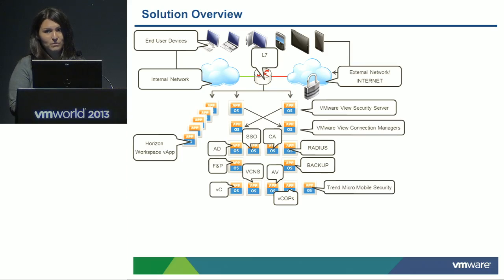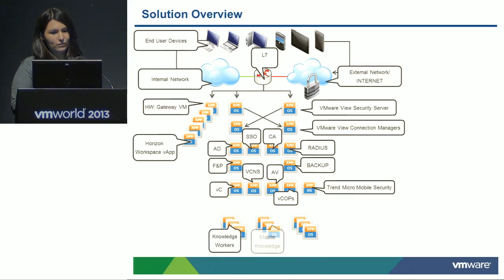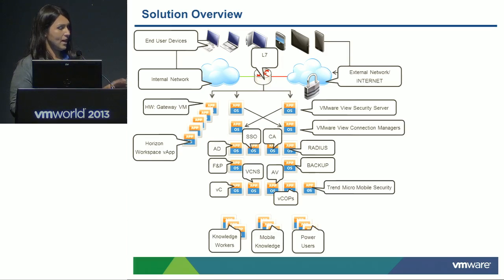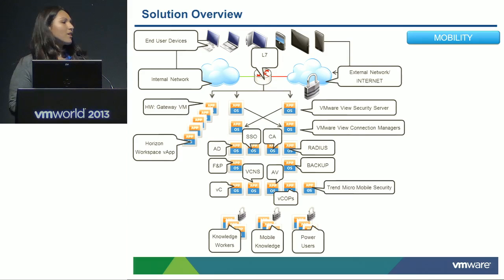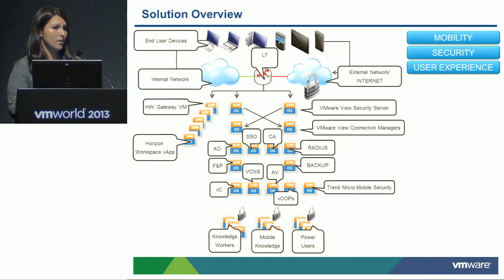Just to wrap it up: the load balancer points to the gateway VA. At the bottom we have our different desktops — the solution lends itself to different users and workloads, so that will depend on how you want to set up your infrastructure. The solution has three key components: the first one being mobility, the second one being security, and the third one being user experience. You want to make sure everything is tuned so the user has the best possible experience with View and Workspace.